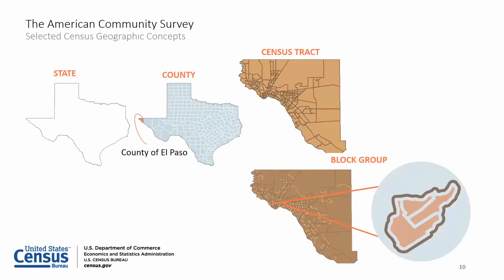ACS data are most commonly needed at the state, county, place, census tract and block group geographic levels. Census tracts are small statistical subdivisions within a county with populations of 1,200 to 8,000 people — think small towns, rural areas or neighborhoods. Block groups are a group of blocks within a census tract with 600 to 3,000 people. ACS's unique ability to report on a wide range of geographies is what gives it its broad appeal.